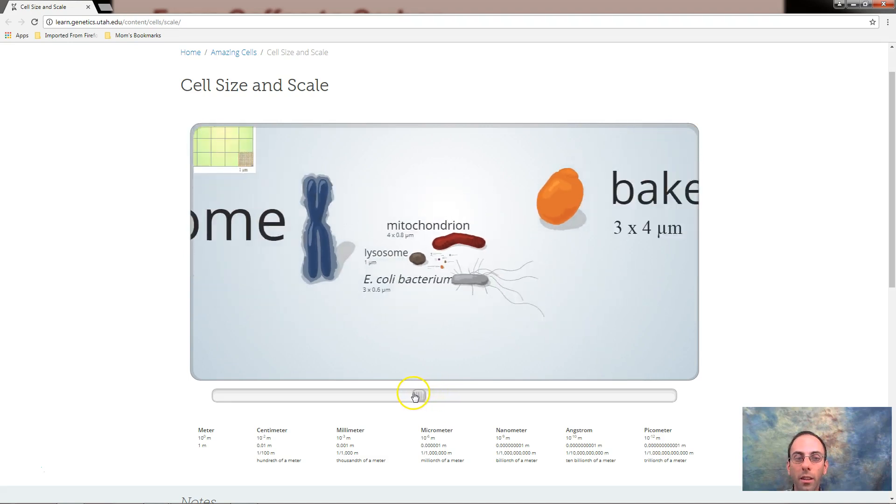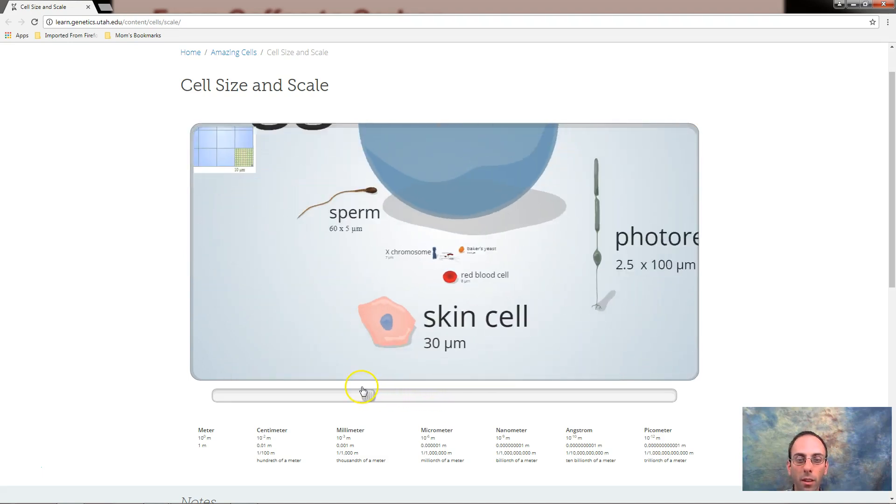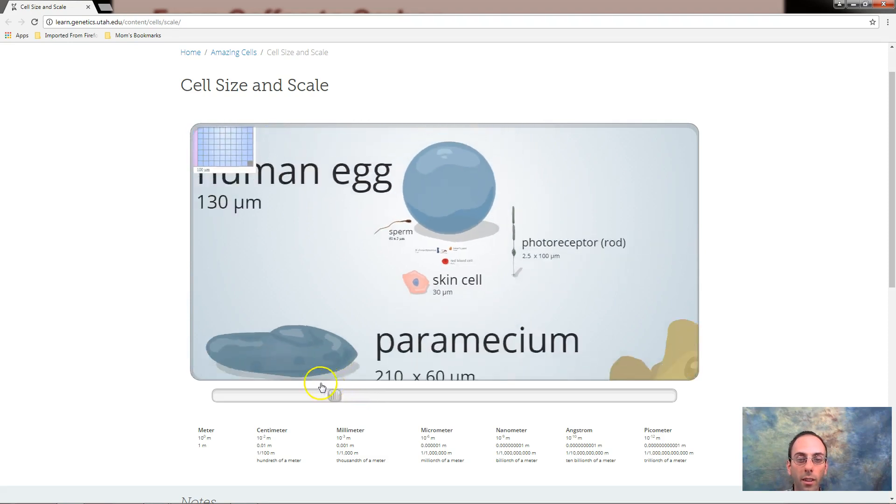E. coli. Chromosome. Baker's yeast. Red blood cells. Sperm cell. Egg cell. Skin cell.